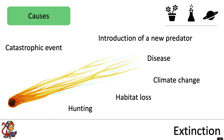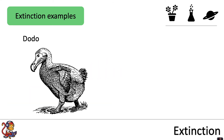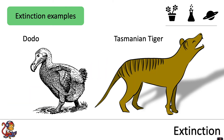Looking at some extinction examples, we have the dodo and the Tasmanian tiger. The dodo lived on the island of Mauritius and the Tasmanian tiger inhabited Australia. With both of these examples, hunting was a major factor in their extinction. There could well have been other contributing factors like habitat loss and disease, but one of the main contributing factors was human hunting.